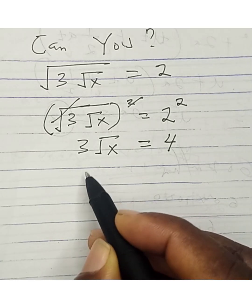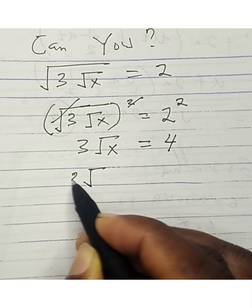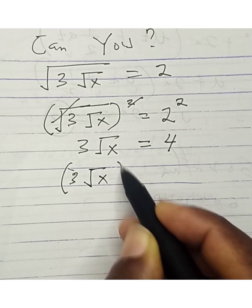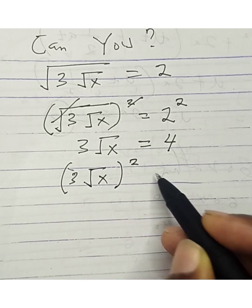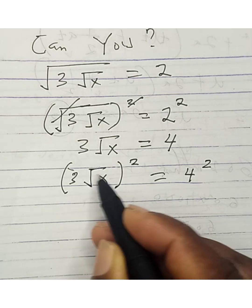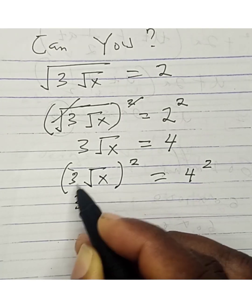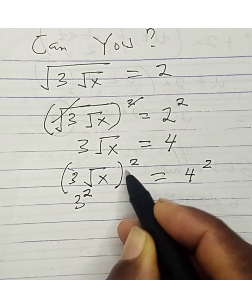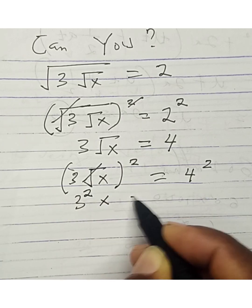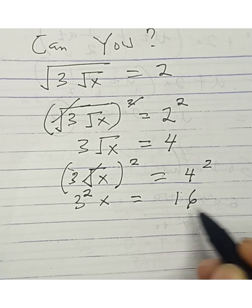So we can square it again. We have 3√x, squared, equals 4 squared. So this gives us 3 squared, and the square root cancels, meaning x equals 4 squared which is 16. So we have 9x equals 16.